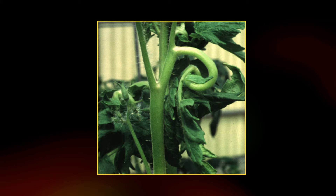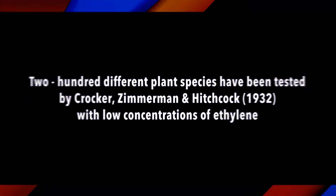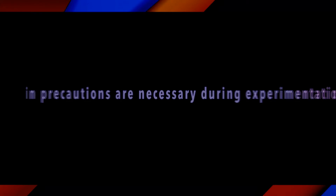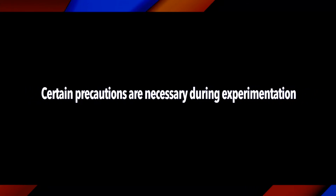The leaf cells on the top part of the leaf outgrow the bottom ones, and the leaf drops from a horizontal to a more vertical position. Two hundred different plant species were tested by Crocker, Zimmerman, and Hitchcock in 1932 with low concentrations of ethylene. These authors recommend tomato plants as the most suitable test plants for the epinastic responses of petioles, as they are an extremely delicate test for the presence of ethylene. Certain precautions are necessary during the experimentation.